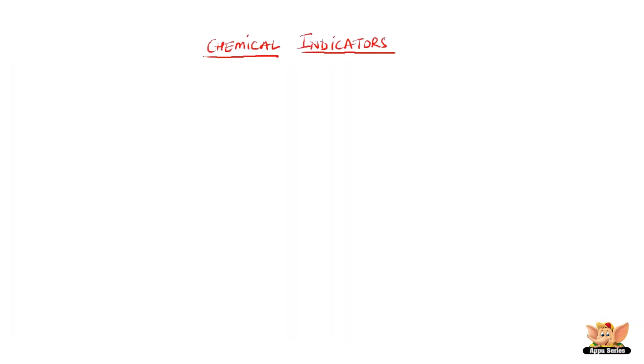In this video, let's learn about chemical indicators that help us identify whether the given chemical is an acid or a base. So what is a chemical indicator? Chemical indicator is a substance that indicates the presence of an acid or a base.